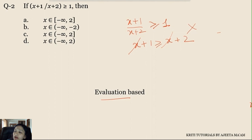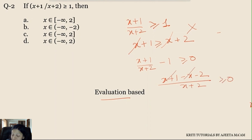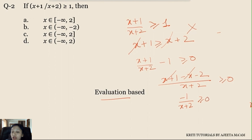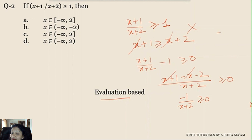A simple trick has to be applied. We write x+1 upon x+2 minus 1 ≥ 0, then take LCM as x+2. Solving this, x cancels and we get -1 upon x+2 ≥ 0. Now we have to find the condition for x+2 so that the entire fraction becomes greater than or equal to 0. Since the numerator is negative, the denominator must also be negative for the result to be positive.